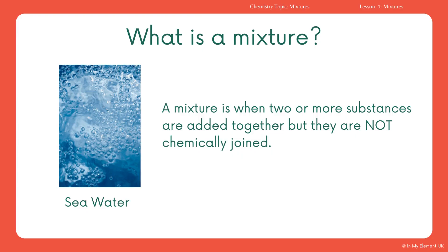To start off with, a mixture — very simply, it's when two or more substances are added together but they're not chemically joined. This means we can separate them. They're different to a compound. A compound is chemically combined, chemically joined together, and it can't be easily separated without a reaction.